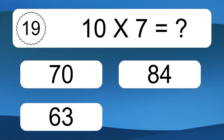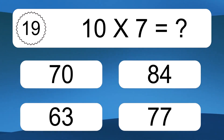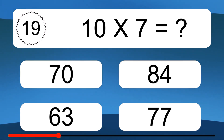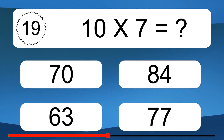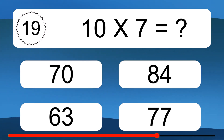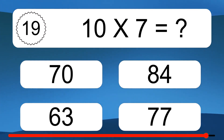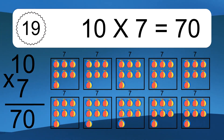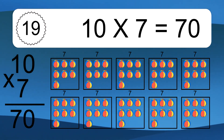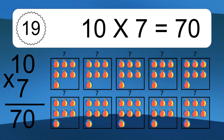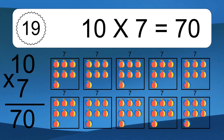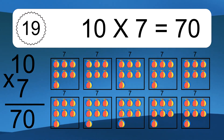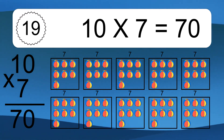10 times 7 equals what? 10 times 7 equals 70. We have 10 boxes, and each box has 7 colorful balls inside. If you count all the balls in all the boxes together, you will have 10 times 7 balls. This equals 70 balls.